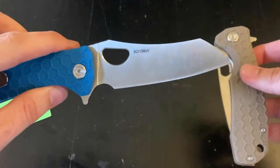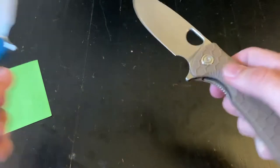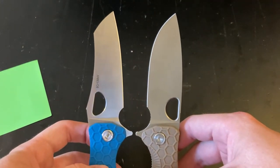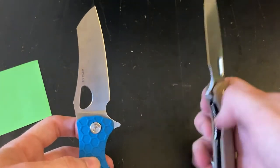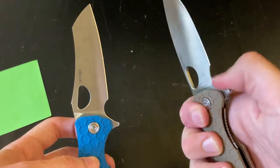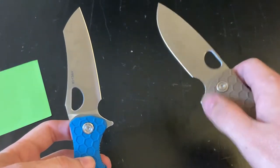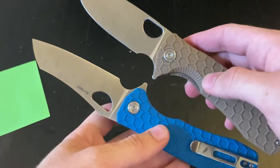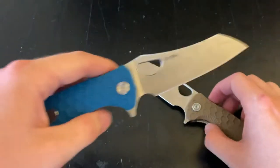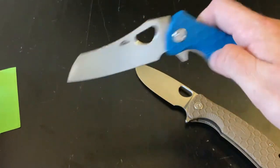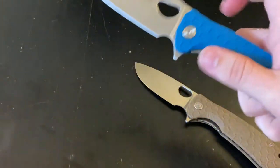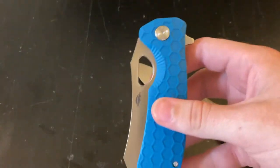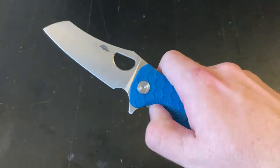Which can be honestly kind of annoying in the pocket. Action on both is really just phenomenal. I kind of like this jimping on the forward finger choil on the original large version. But I would have to say that the action and overall flippability and fun experience that you get with a Honey Badger, the shape of this blade kind of just amplifies it all around.